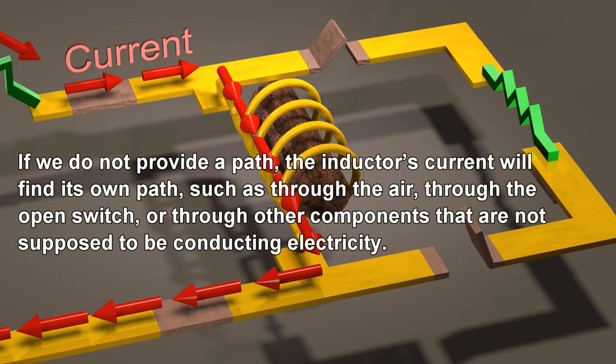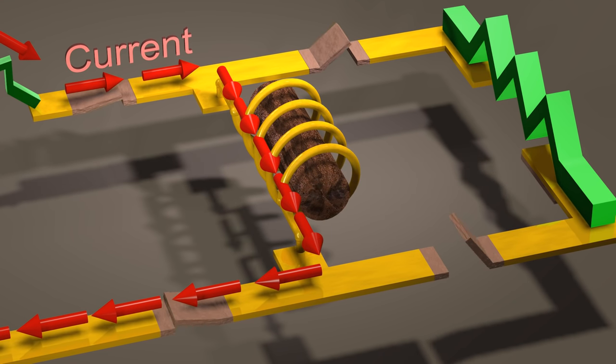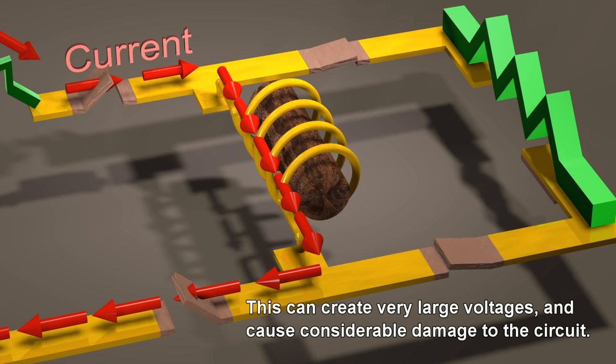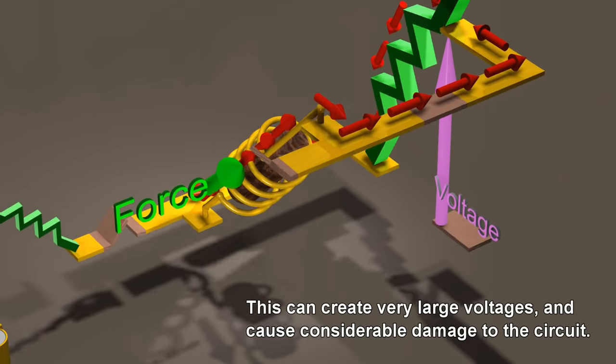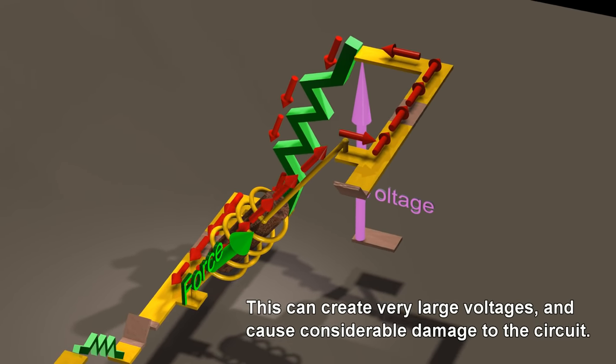If we do not provide a path, the inductor's current will find its own path, such as through the air, through the open switch, or through other components that are not supposed to be conducting electricity. This can create very large voltages and cause considerable damage to the circuit.